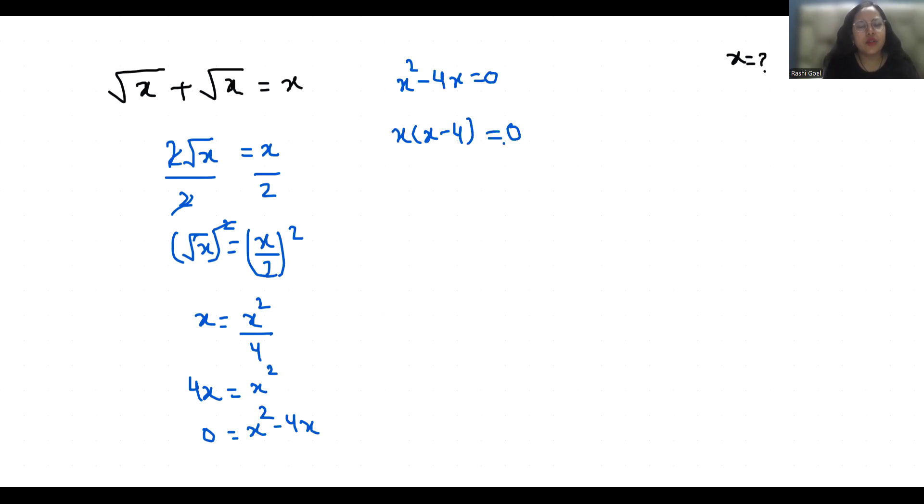So x = 0 and x - 4 = 0, which gives us x = 0 and x = 4. These are the two values of x.